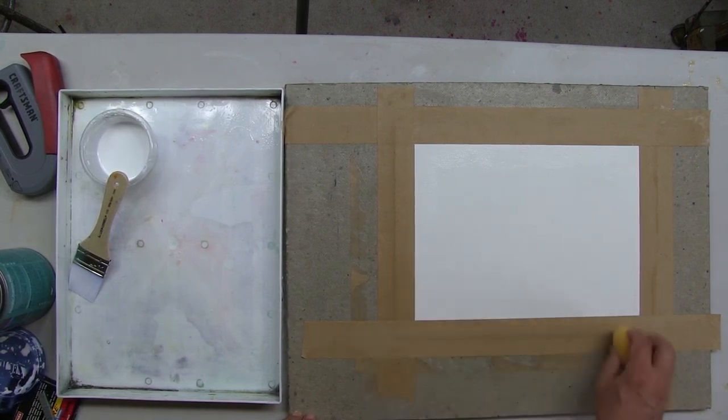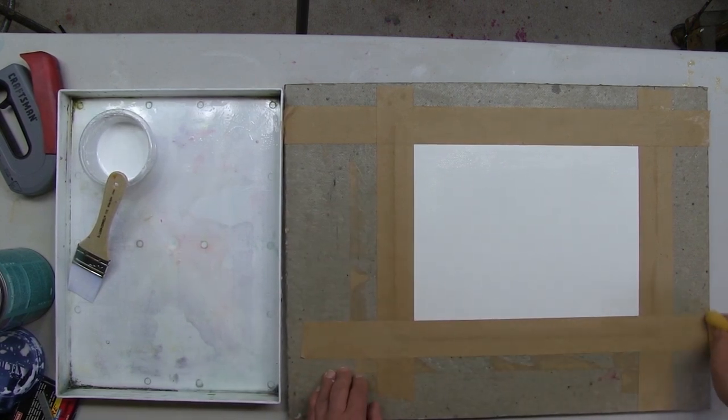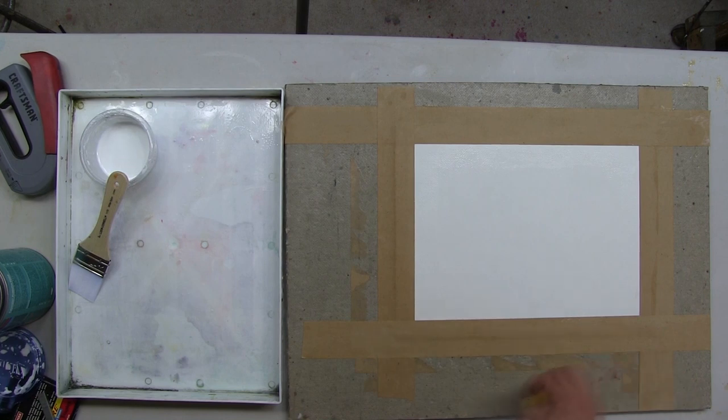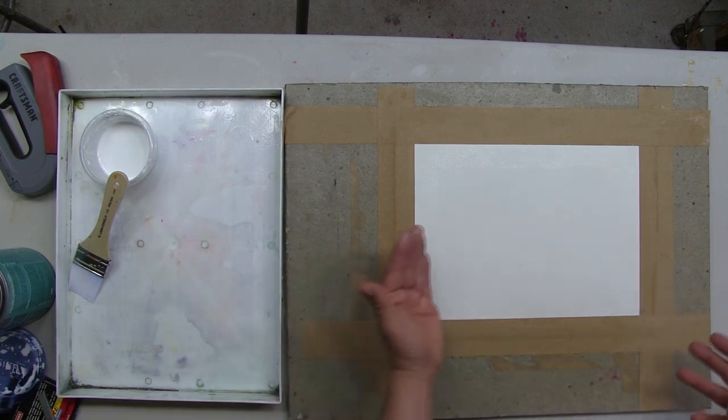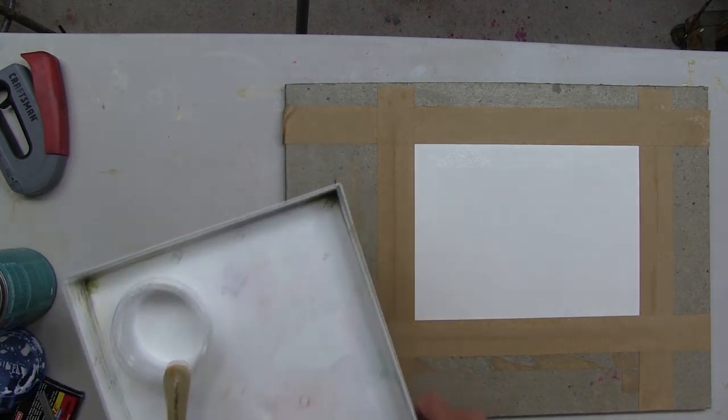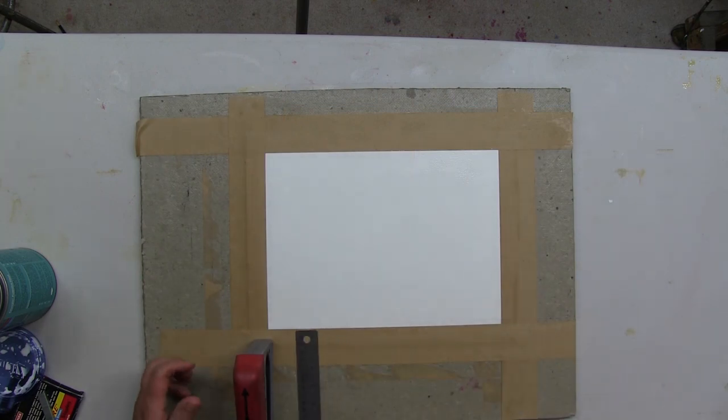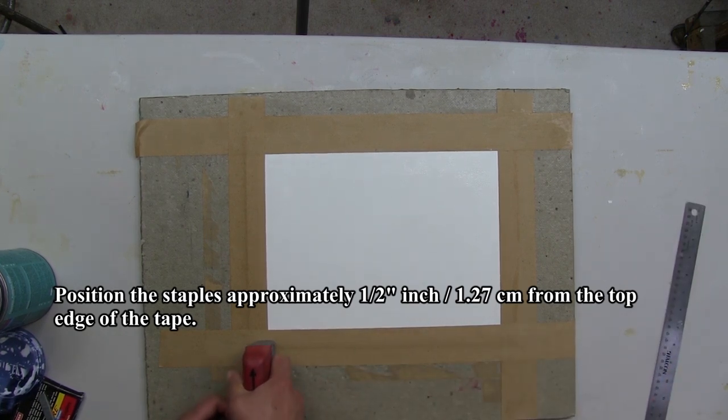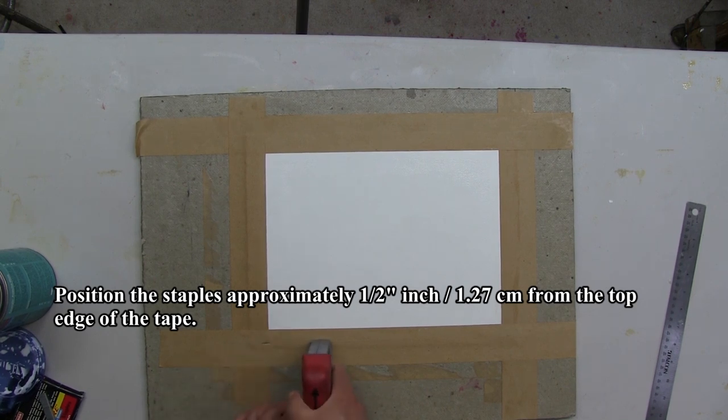The next thing that I do is I staple it. That minimizes the potential of the paper pulling out from underneath the tape. Let's move this to the side. I usually staple just about a half inch from the top edge of the tape.